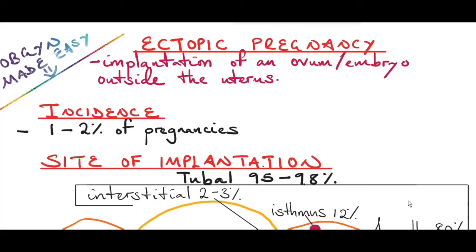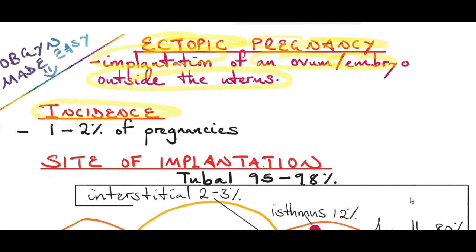Hi guys, welcome back to my channel, OBS and Guide Made Easy. In today's video, I'm going to discuss ectopic pregnancy. What is an ectopic pregnancy? This is implantation of an ovum or embryo outside the uterus. The incidence of ectopic pregnancy is about 1-2% of pregnancies, and it's one of the common causes of maternal morbidity and mortality.